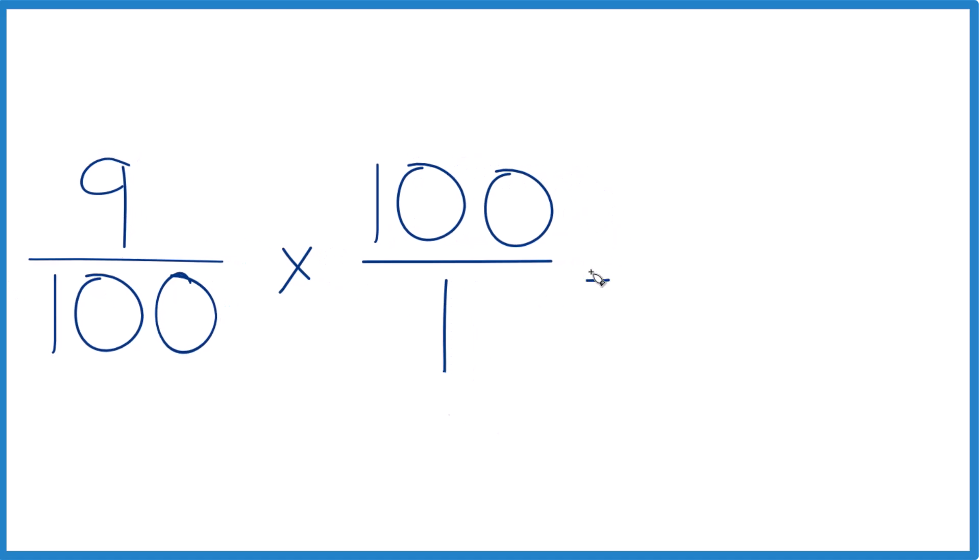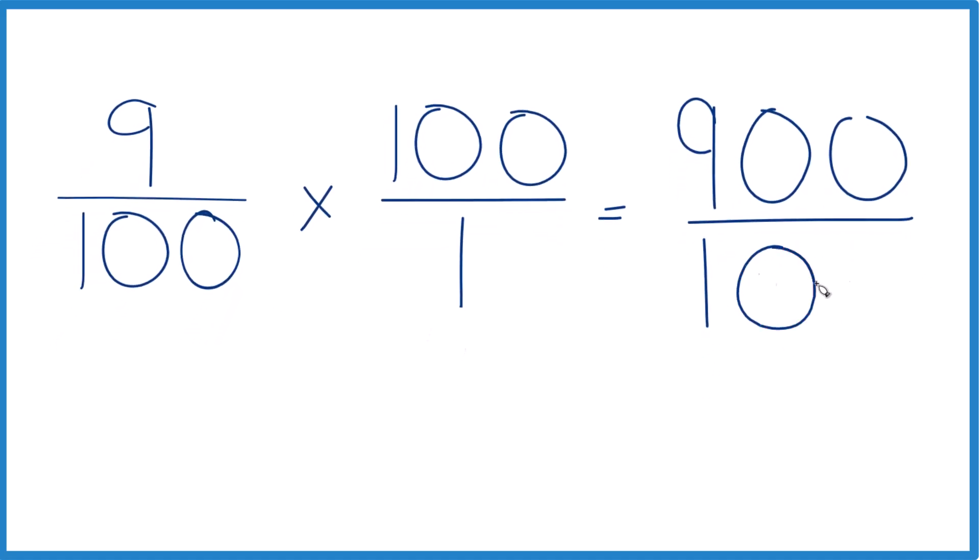So 9 times 100 is 900, and then 100 times 1, that's 100, and 900 divided by 100, that equals 9, just like we found before.